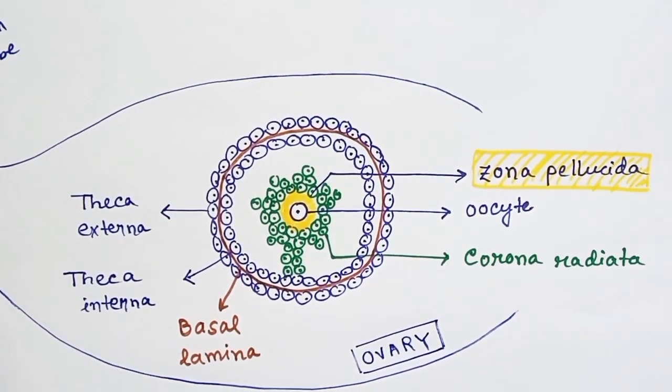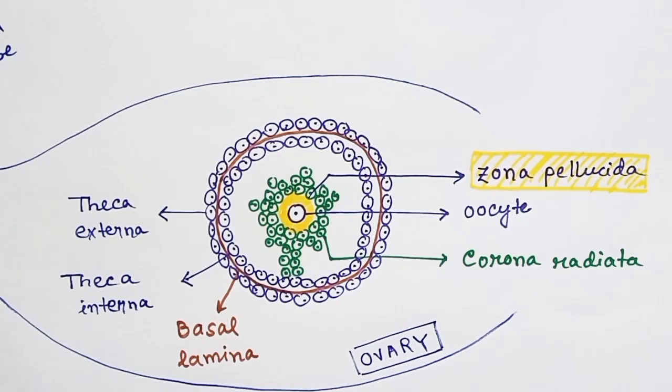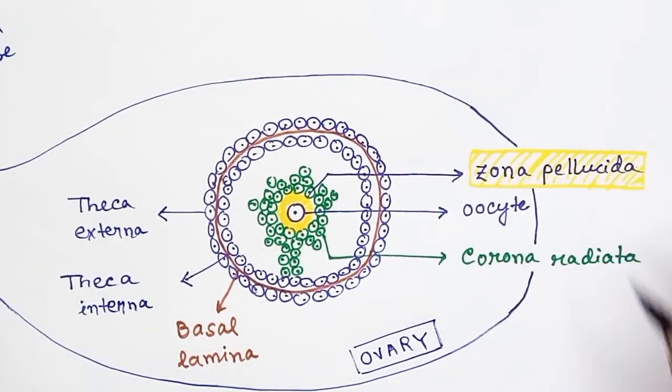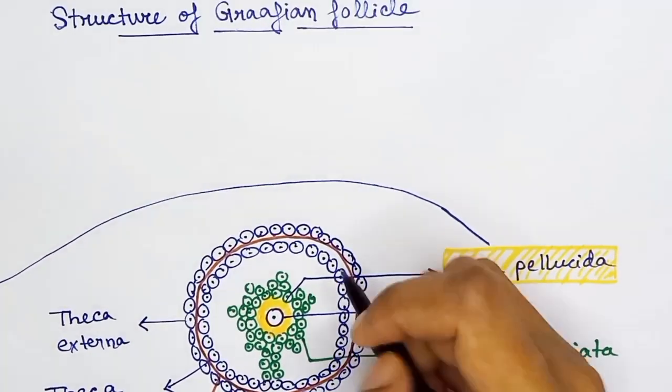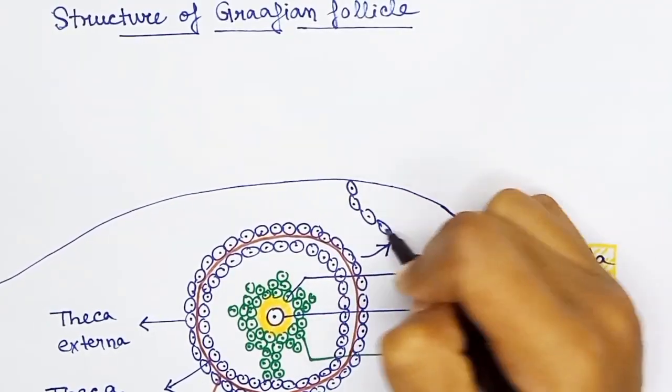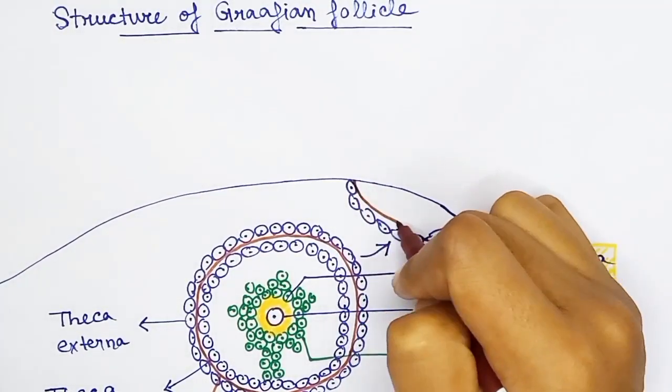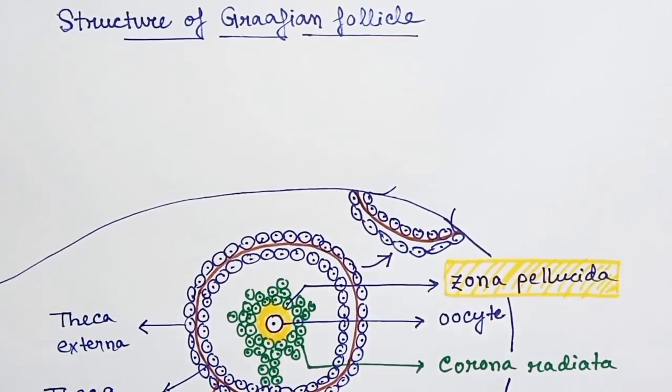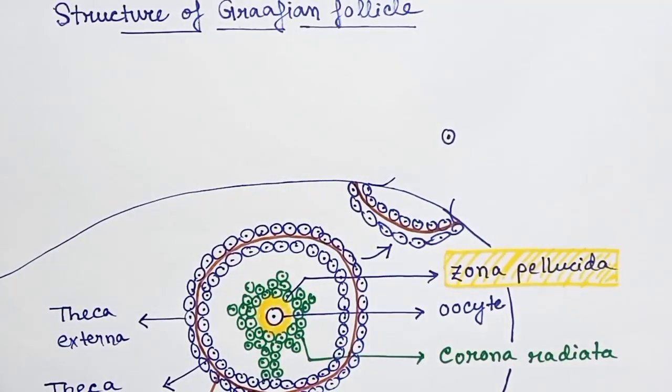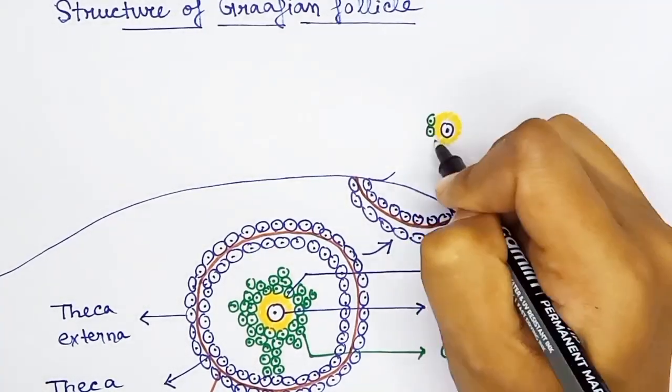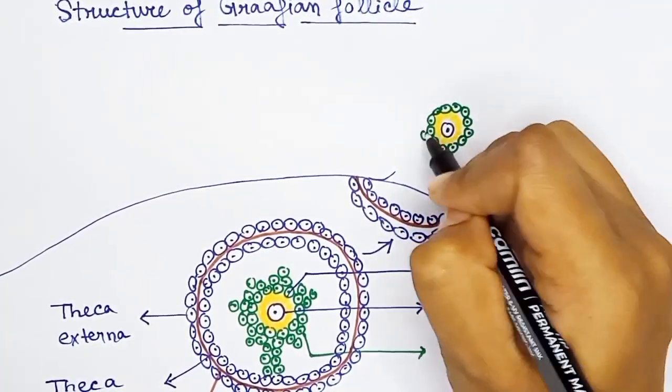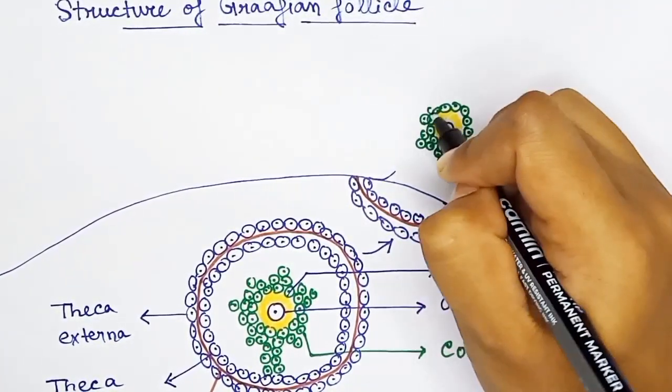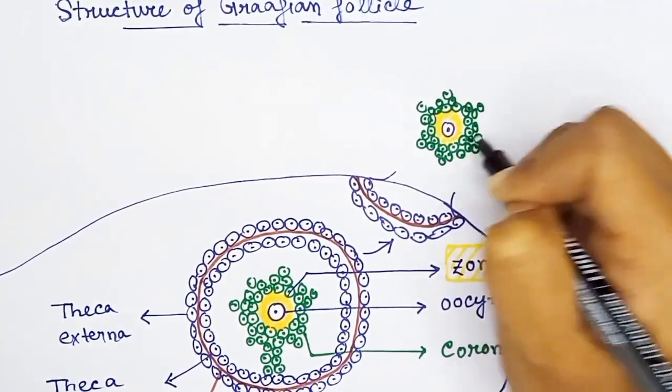During ovulation, this follicle ruptures and fuses with the wall of the ovary. The theca layer, theca externa and theca interna, remains inside the ovary. The oocyte goes out of the ovary after rupturing. This oocyte contains with itself the zona pellucida layer and the corona radiata layer.